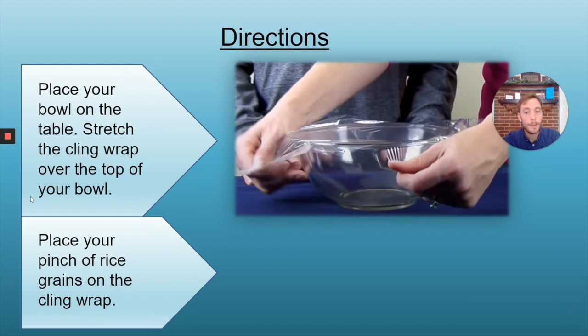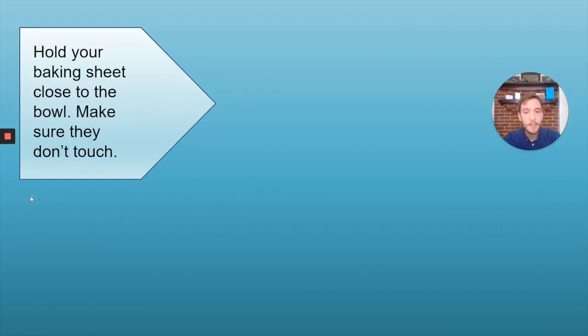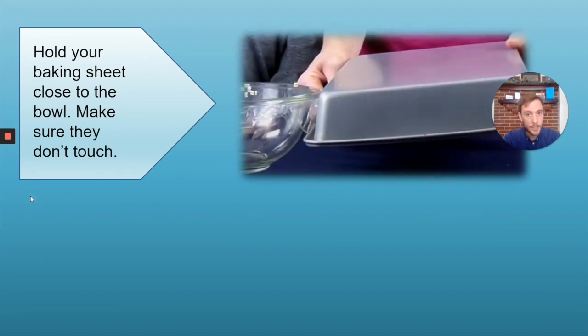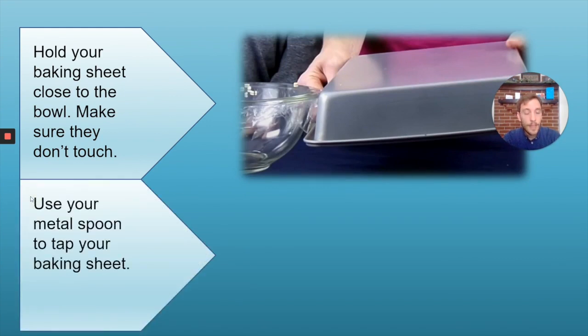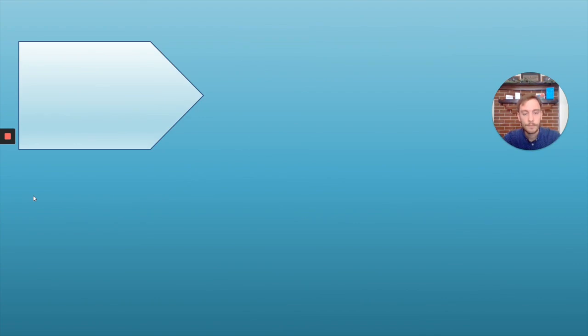Next, you'll want to place your pinch of rice grains on top of the cling wrap. After that, you'll need to hold your baking sheet close to the bowl. Make sure the bowl and the baking sheet aren't touching each other. Then you can use your metal spoon to tap your baking sheet. Vary the way that you tap your baking sheet. Sometimes try taps with a lot of force, and then sometimes try taps with not so much force. After this, you'll want to record your observations.